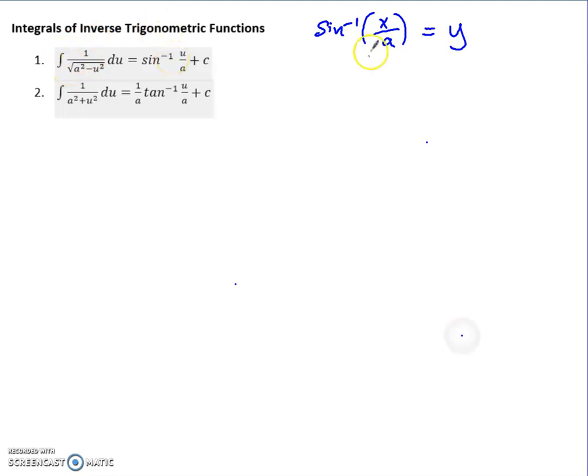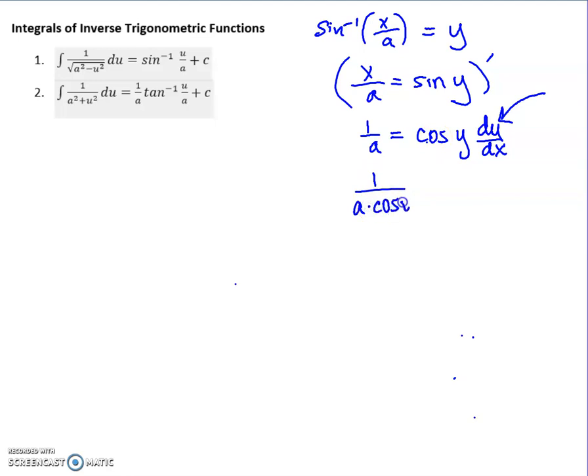So I'm going to do sine inverse of x over a equals my function. I'm going to show that the derivative of this produces that, and so then the integral would get you back to that. I'm going to start by taking the sine of both sides. It's a little easier to work for the integration. Now I'm going to take the derivative of both sides. So the derivative of this side would just be 1 over a. And the derivative of this side would be cos of y. But because I'm doing it with x, I would have to attach a dy dx. But that's okay, because this is technically what I'm looking for. I'm trying to prove what the derivative is. So this would be 1 over a divided by cosine y.